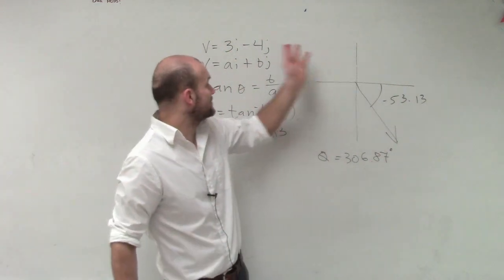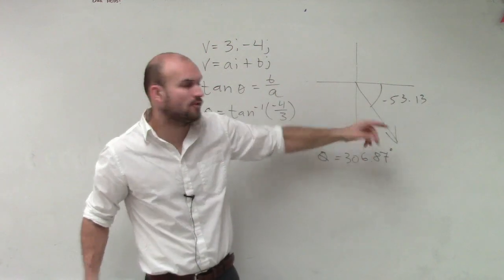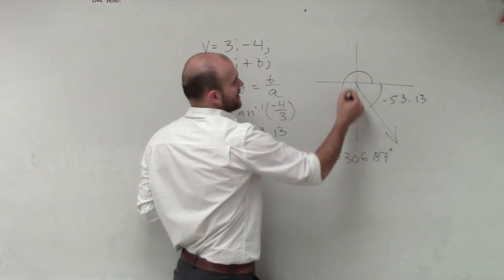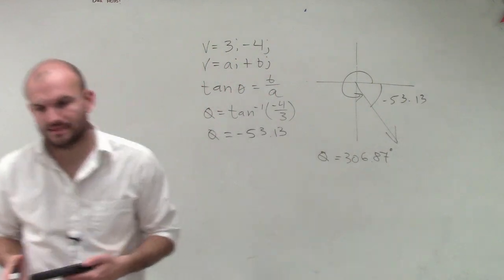So just make sure, since we know that my angle is in the fourth quadrant, 3, negative 4, make sure that we find our positive value of our angle, which would be down there. And that's it.